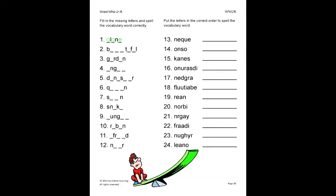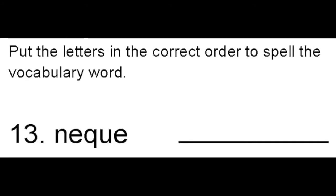On this next part of the activity, the student will put the letters in the correct order to spell the vocabulary word. We are given the scrambled letters N, E, Q, U, and E. We can refer back to the definitions page to see that these letters are in the word queen. So we will neatly write queen on the provided line.